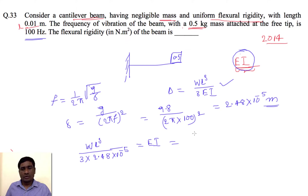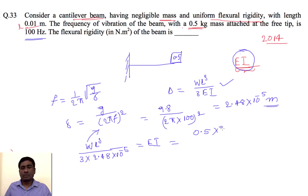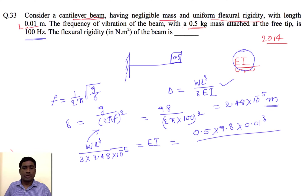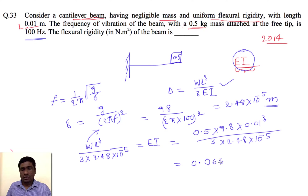W is a force, so W = 0.5 × 9.8 newtons. The length L = 0.01 m. So EI = (0.5 × 9.8 × (0.01)³) / (3 × 2.48 × 10⁻⁵) = 0.0658 N·m². The unit is newton meter squared. This problem was asked in 2004.